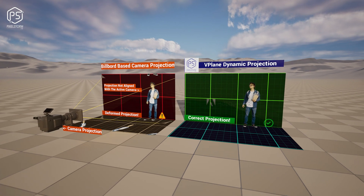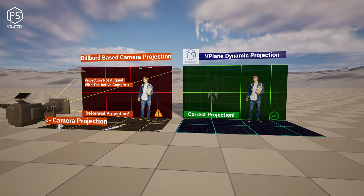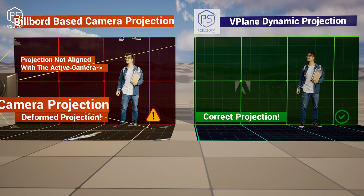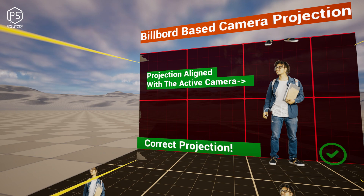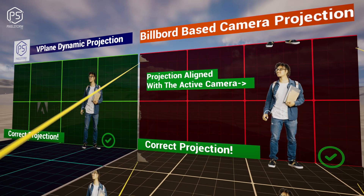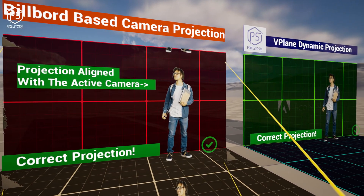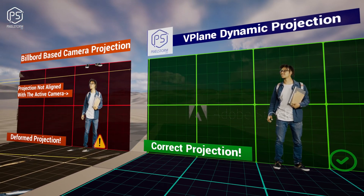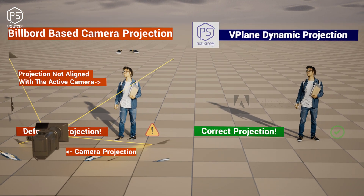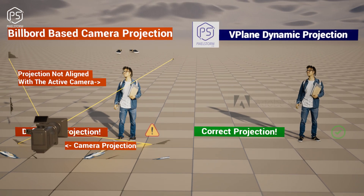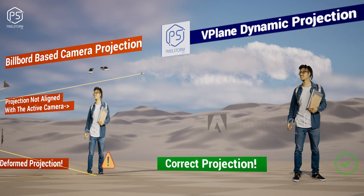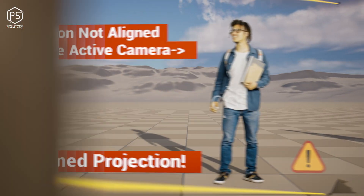The virtual camera actor doesn't have this issue. It maintains proper projection whether we're dealing with virtual camera movements or moving it manually. The projection method used in v-plane actor isn't tied to any specific projection angle or camera field of view. We can easily move the v-plane actor while maintaining correct projection relative to the main camera. This setup provides the freedom to create animations and virtual camera movements. The strength of the v-plane actor lies in its ability to animate virtual cameras while keeping an accurate projection of the media source.